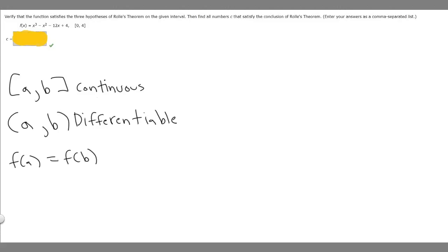In this problem we're told to verify that the function satisfies the three hypotheses of Rolle's theorem on the given interval. Then find all numbers C that satisfy the conclusion of Rolle's theorem. Enter your answers as a comma separated list. We're given this function, f(x) = x³ - x² - 12x + 4, on the closed interval from 0 to 4.